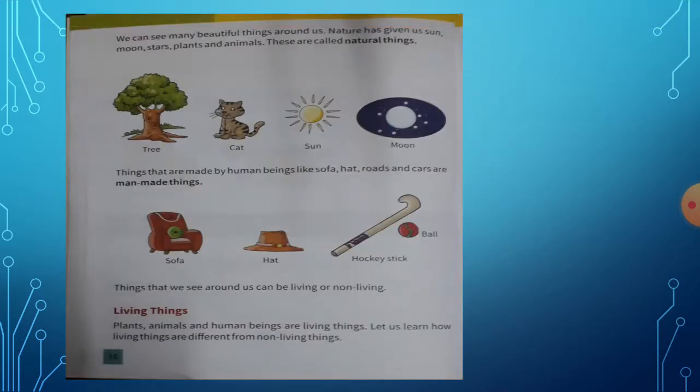Page 16, open. See here — tree, cat, sun, moon. We can see many beautiful things around us: tree, cat, sun, moon, sky, animals, insects, birds. We can see many beautiful things around us.